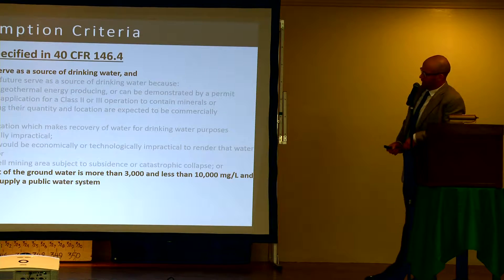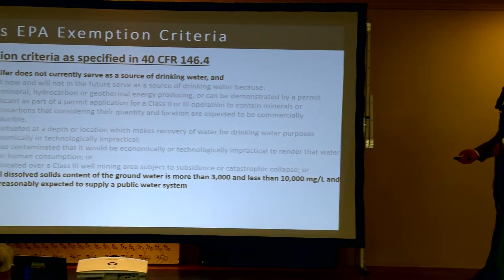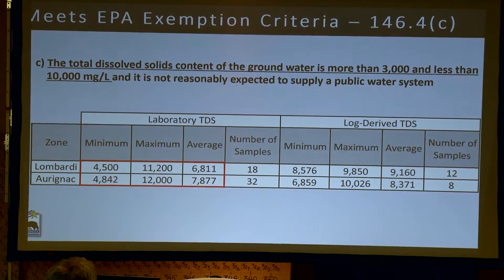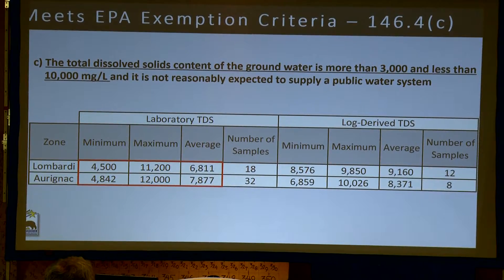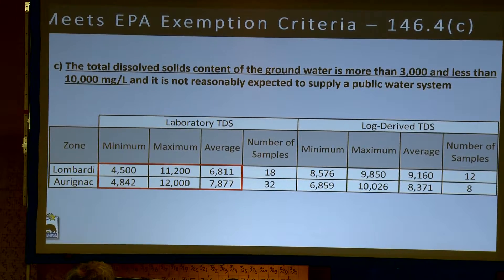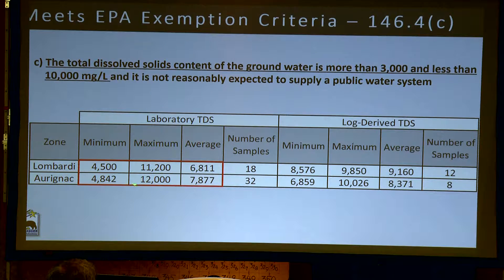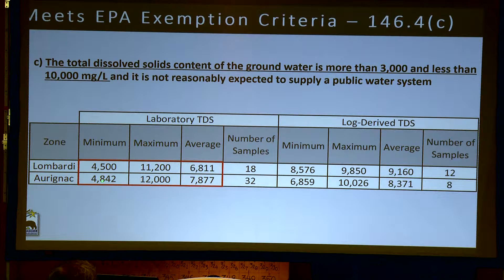The Lombardia and the Aranac do not currently serve as a source of drinking water. Now let's look at the second criteria: the total dissolved solids content of the groundwater is more than 3,000 and less than 10,000, and it is not currently expected to supply a public water system. A number of water samples have been collected from the Lombardia and the Aranac and analyzed in the laboratory. Lombardia samples range from about 4,500 to over 11,000 milligrams per liter TDS, with an average of about 6,800. In the Aranac, the low is 4,800, the high is 12,000, with an average of 7,800.